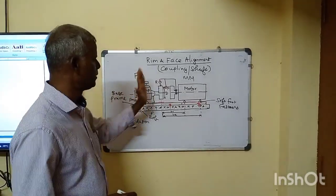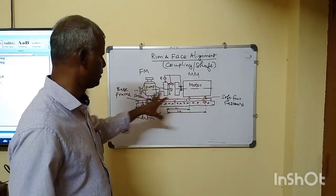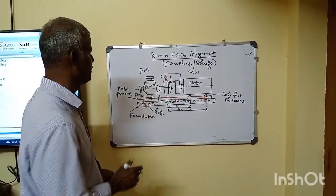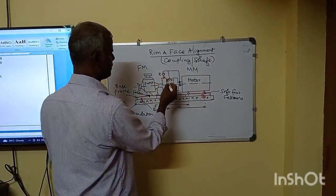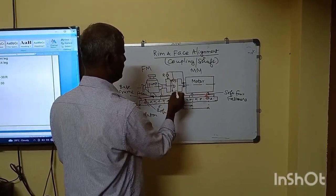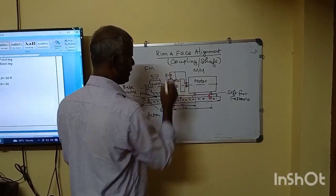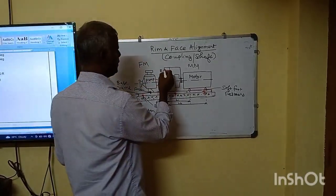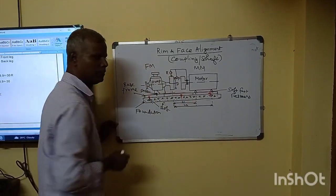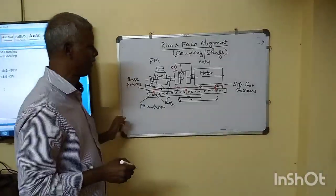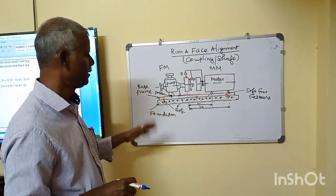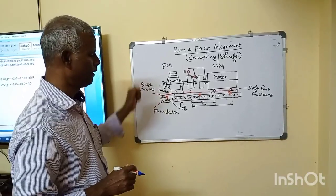We will identify the fixed and moveable sides and do the detail of the dial gauges. There are two dial gauges. We will do one dial gauge and show you the same answer.